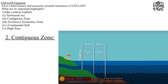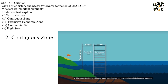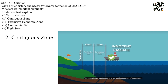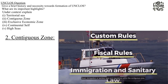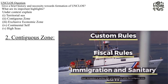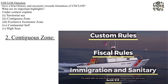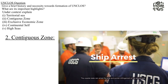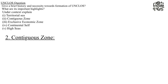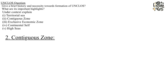Contiguous Zone: The contiguous zone may not extend beyond 24 nautical miles from the baselines from which the breadth of the territorial sea is measured. In a zone contiguous to its territorial sea, the coastal state may exercise control necessary to prevent infringement of its customs, fiscal, immigration, or sanitary laws and regulations within its territory or territorial sea, and punish infringement of those laws. Unlike the territorial sea, the contiguous zone only gives jurisdiction to a state on the ocean's surface and floor — it does not provide air and space rights.